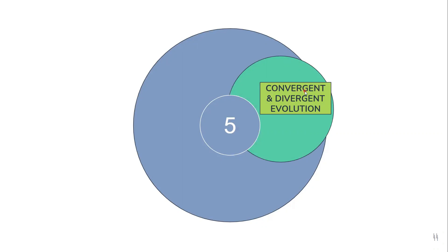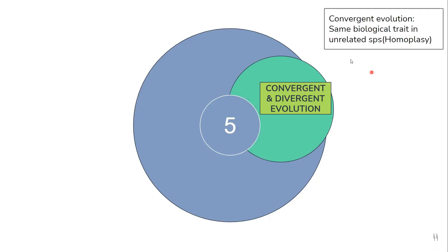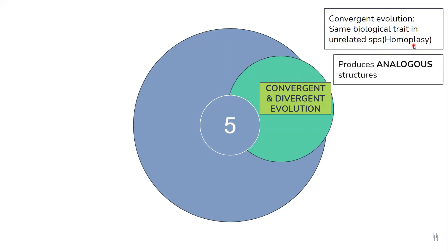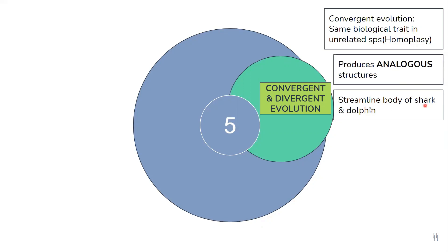Convergent evolution is where two unrelated species have the same biological trait. This is also termed as homoplasy. Convergent evolution gives rise to analogous structures. For example, the streamlined body of sharks and dolphins — sharks are fish whereas dolphins are mammals, so both are unrelated species, however the body shape is the same.